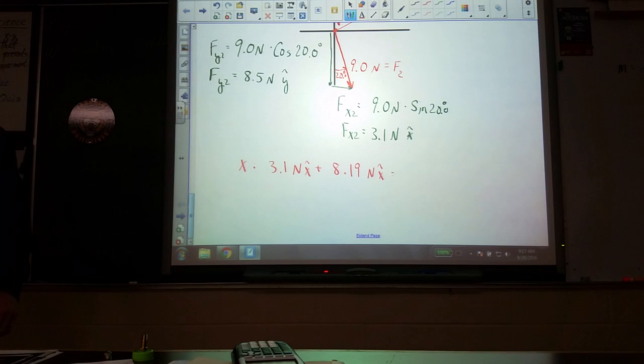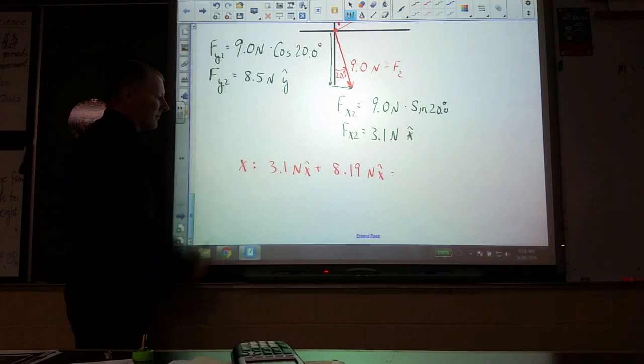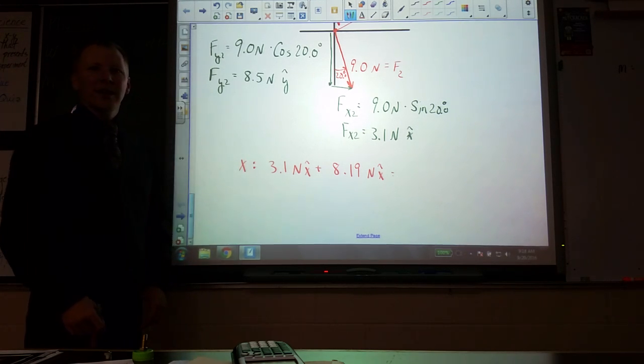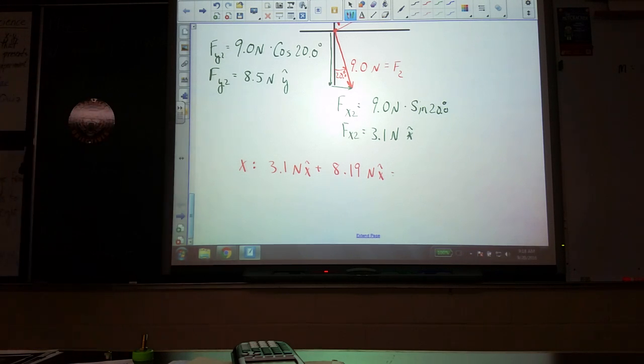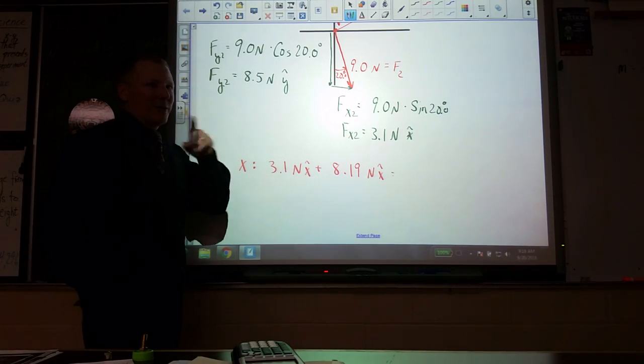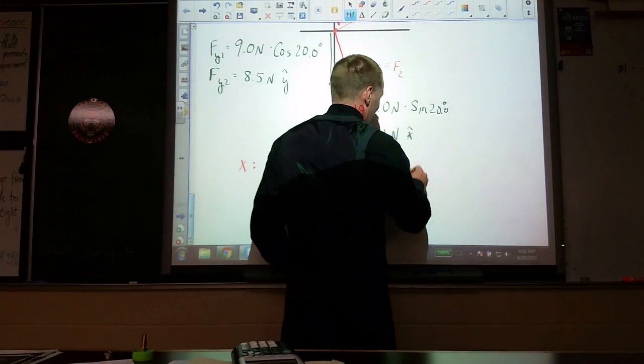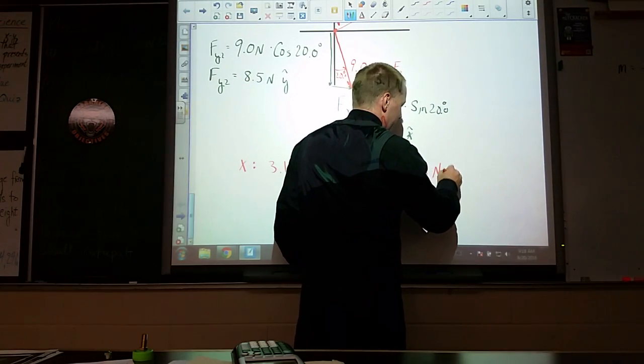This is the total force in that direction. What would we get? 3.1 plus 8.19. That's 11.29. No, why not? Not really sig figs, but similar rules. What's the rule for addition? Decimal places. So although it would be 11.29, we have to record it as 11.3 newtons in the x-hat direction.